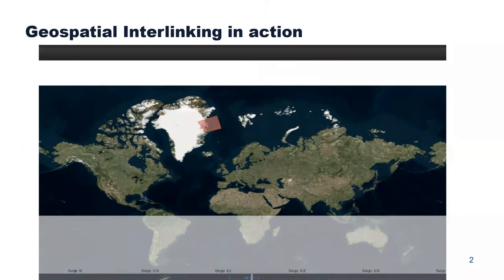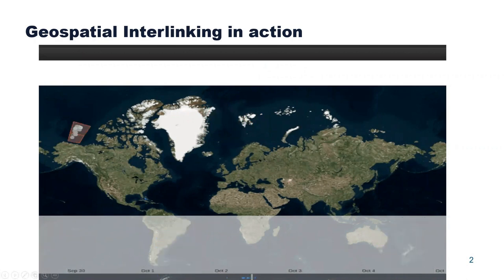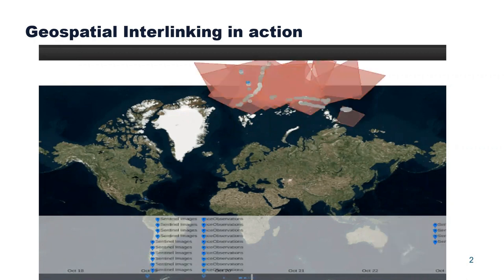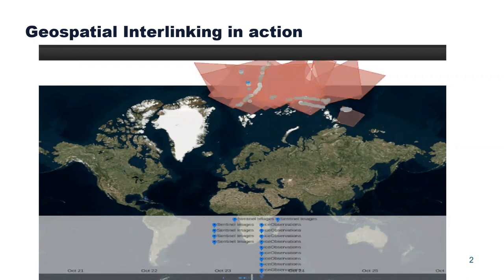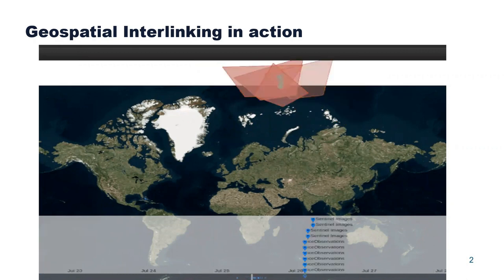The observations are represented here as gray dots, whereas the satellite images correspond to red rectangles. This application, which is crucial for the safety of sailing in the Arctic, should be carried out as fast as possible despite the large volume of information.